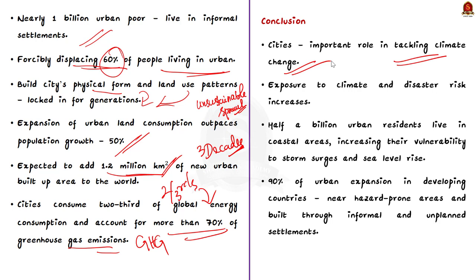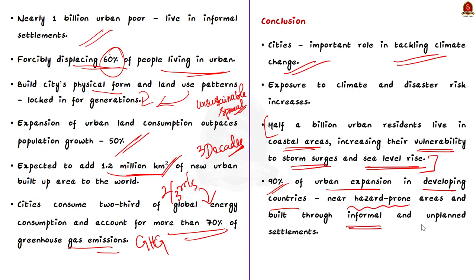Almost half a billion urban residents live in coastal areas, increasing their vulnerability to storm surges and sea level rise. In the 136 biggest coastal cities around the world, there are 100 million people — among them, 20% of the population and US$4.7 trillion in assets are exposed to coastal floods. Around 90% of urban expansion in developing countries is near hazard-prone areas and built through informal and unplanned settlements. So it is very crucial to bring some reforms in urban development.